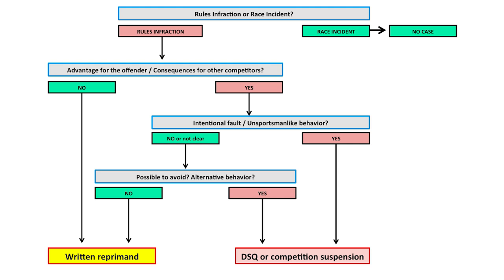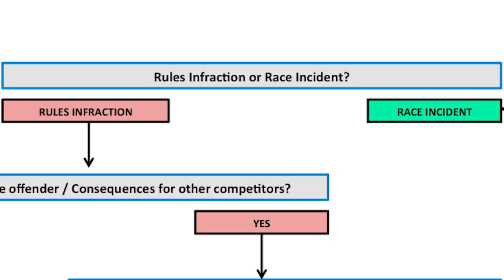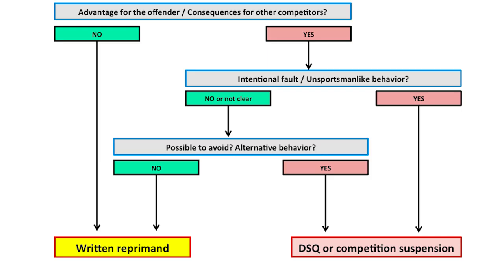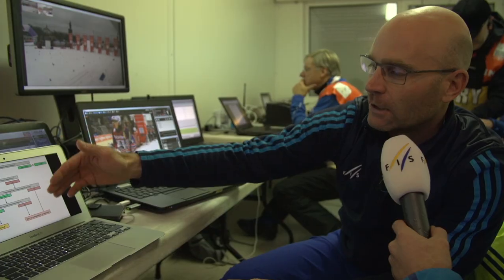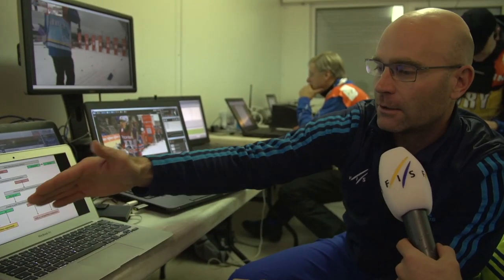The first question is: do we have a rules infraction? If we answer yes, then we have to decide if it was an advantage. If it's yes, then we have other questions that will lead us to the level of the sanction.